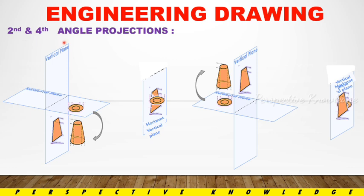Where do we use the second and fourth angle projection? The object is placed in the second quadrant — the front view is on the front plane and the top view is on the top plane, but they overlap, which is why the second angle is not used. Similarly, when the object is placed in the fourth quadrant, the front view and top view also overlap on the front plane. The horizontal plane is rotated, and the views overlap — that's why we do not use the second angle and fourth angle projection.